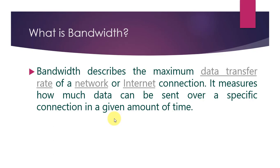We have two definitions for bandwidth. The first: bandwidth describes the maximum data transfer rate of a network or internet connection — it measures how much data can be sent over a specific connection in a given amount of time. The second: bandwidth also refers to a range of frequencies used to transmit a signal, measured in hertz, and is often referenced in signal processing applications.